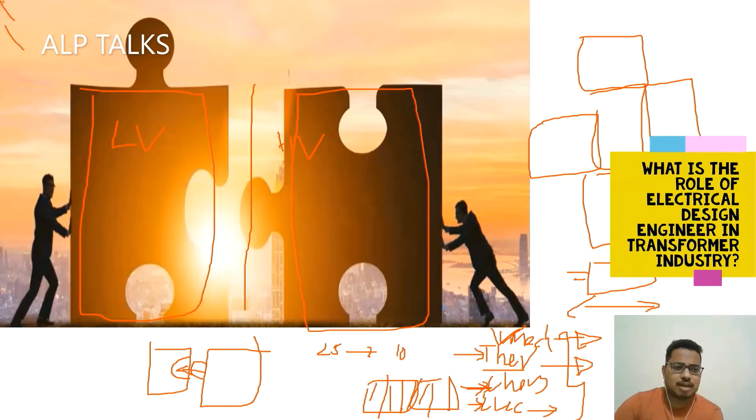Say for example, whatever it is there, say this is the core. I'm just drawing like this, indicating this is the core. I'm just drawing like this to indicate this is the core. Above value is core. So this is LV here, this is high-low gap.